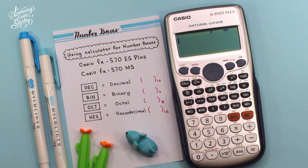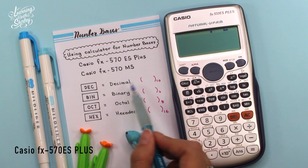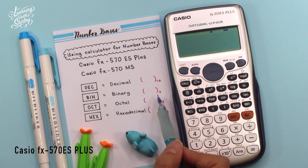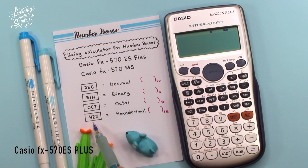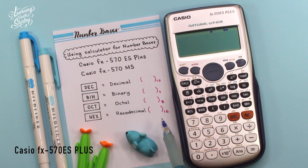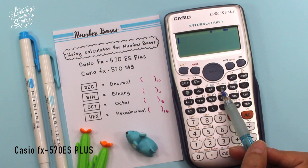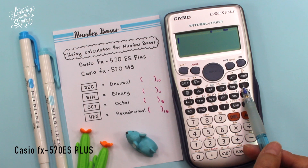I'm going to introduce you to the four buttons I'll use for this chapter. The buttons are: DEC, which stands for decimal, which is base 10. BIN, which stands for binary, which is base 2. OCT, which stands for octal, base 8. And HEX, which stands for hexadecimal, which is base 16. So the four buttons are DEC (decimal, base 10), HEX (hexadecimal, base 16), BIN (binary, base 2), and OCT (octal, base 8).